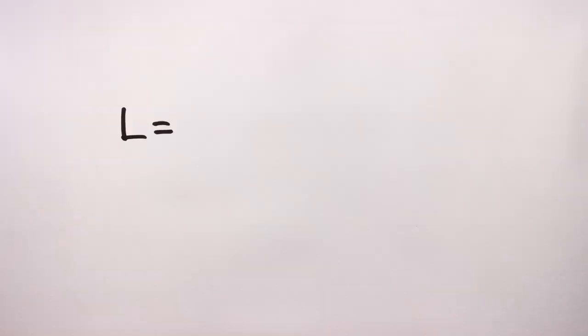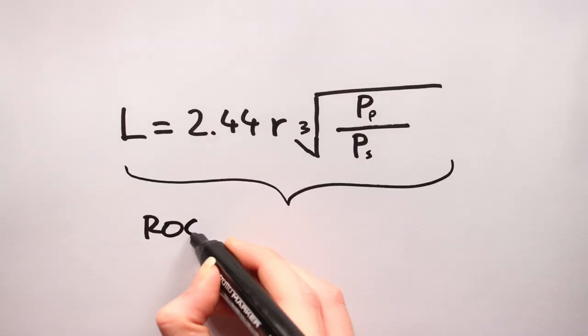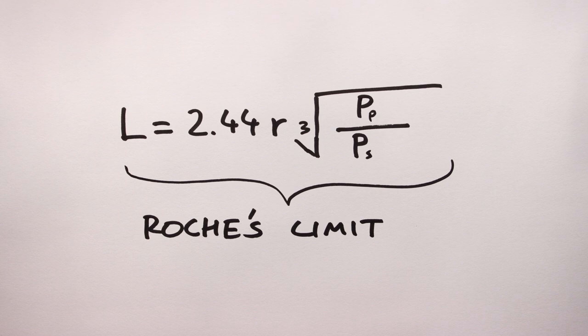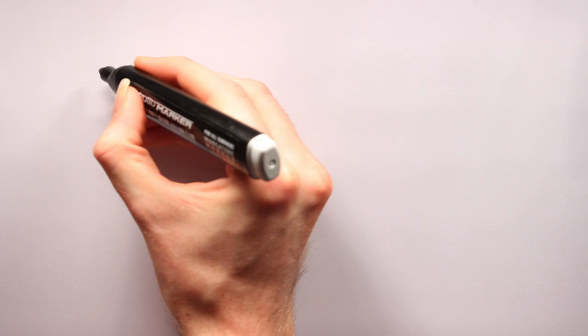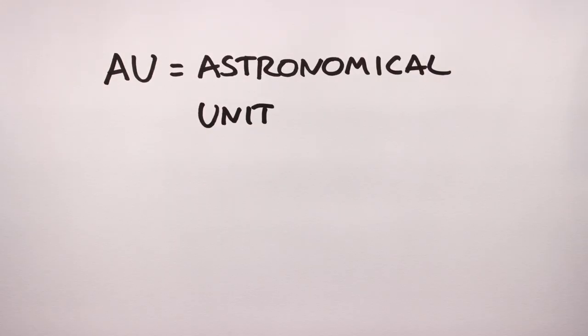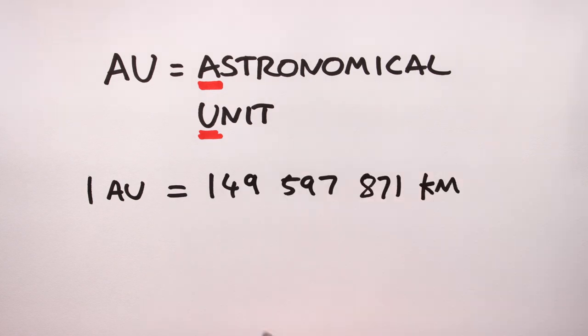That said, a better way of determining the inner limit of a planetary system would be to use Roche's limit. It's a bit complicated to explain in this video, and I'll probably make a supplementary video on Roche's limit soon.